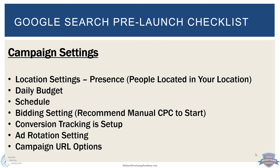Campaign settings is where you want to start. Start from the beginning with location settings — make sure it's set for people located in your location. That's 'presence,' as it's set up inside Google. The default is 'people located in or interested in your location,' and most of the time you don't want that.